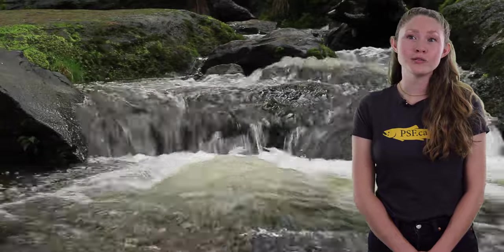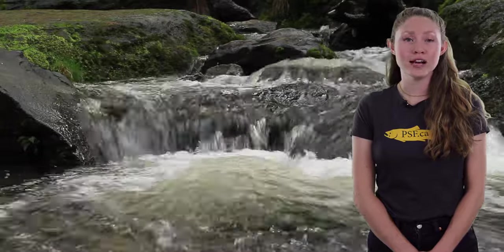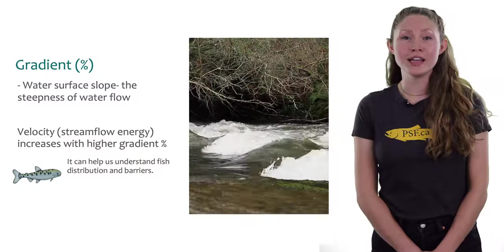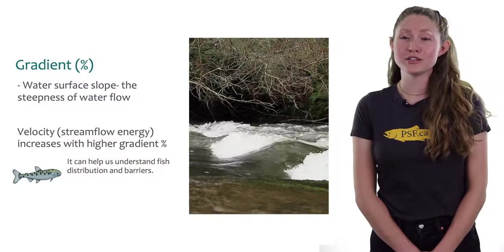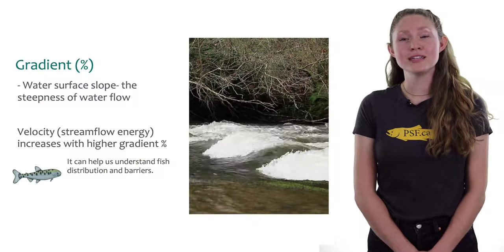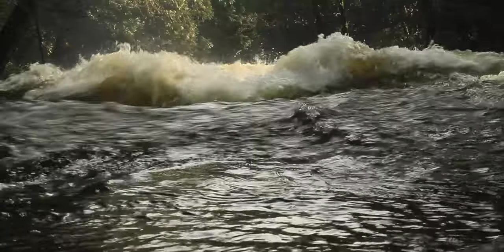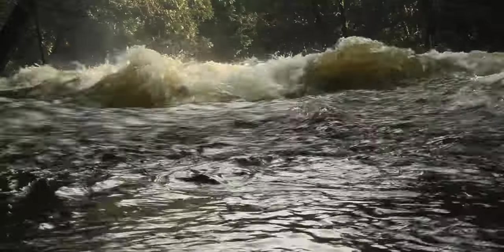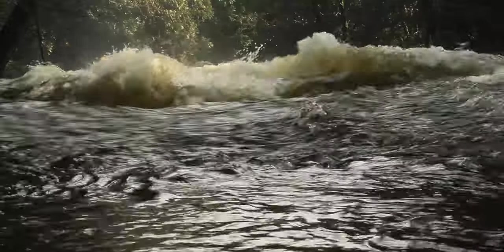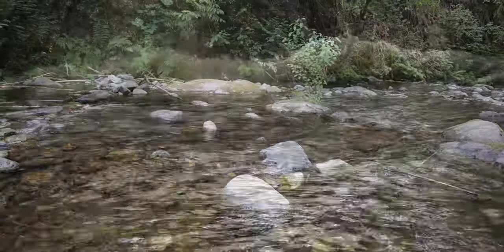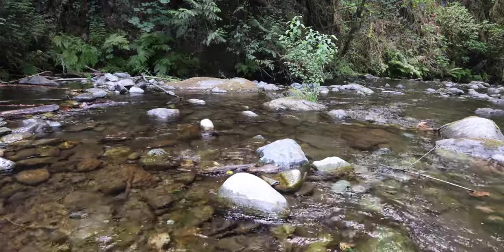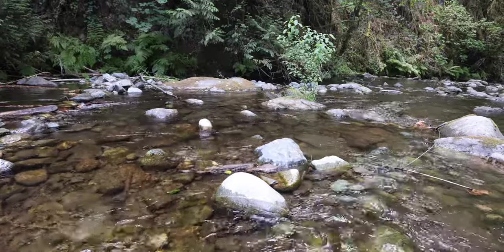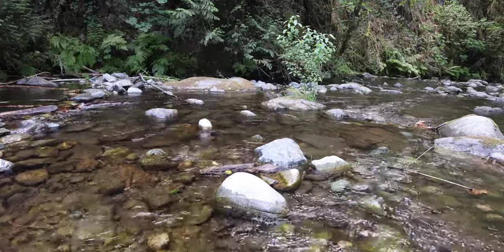One word we're going to talk about is gradient. Gradient refers to the slope or steepness of the stream. High gradient in streams means it's really steep and the water runs faster. Low gradient means the stream water moves slower because the stream is not as steep.